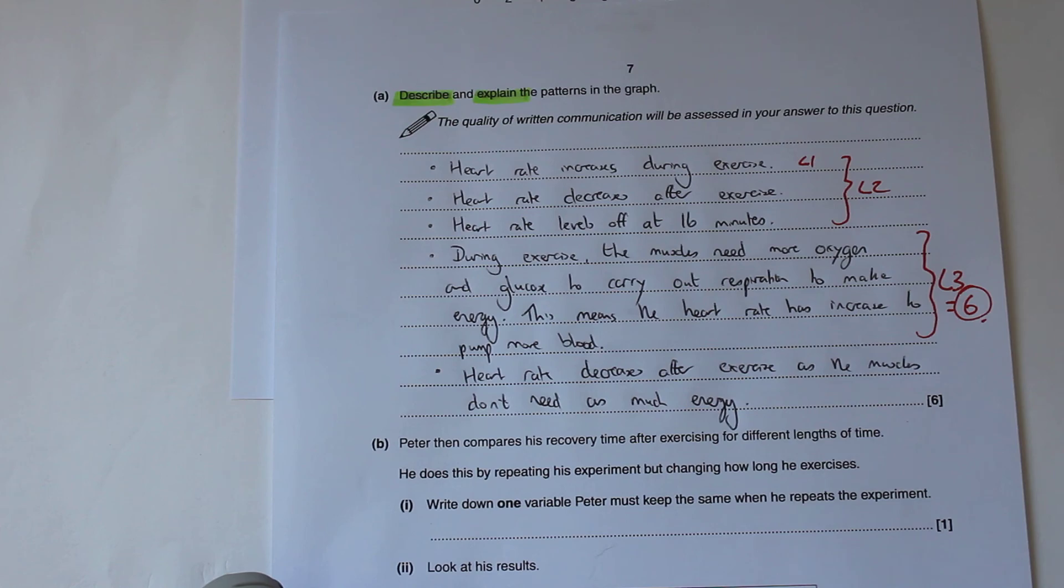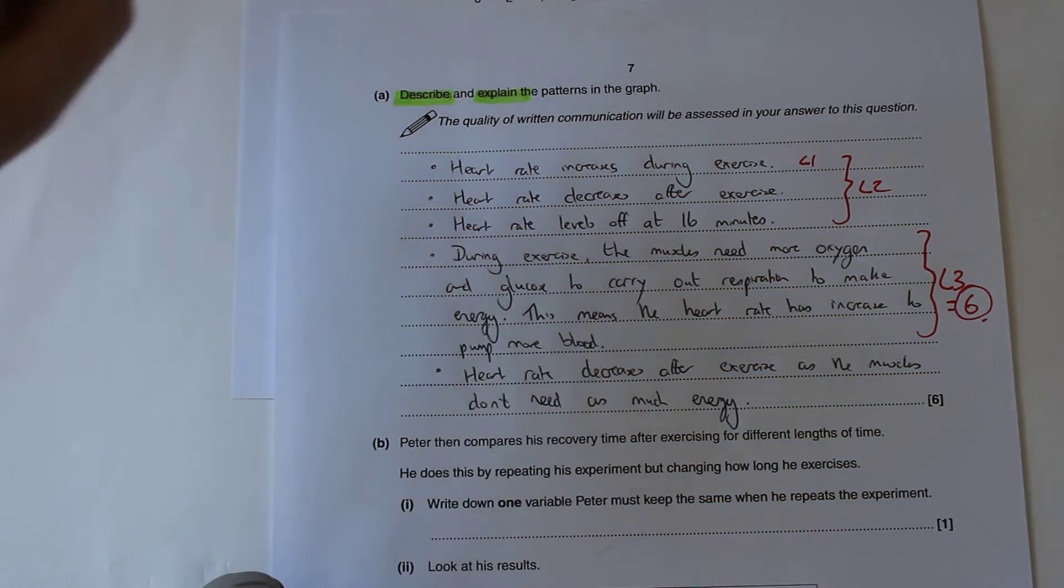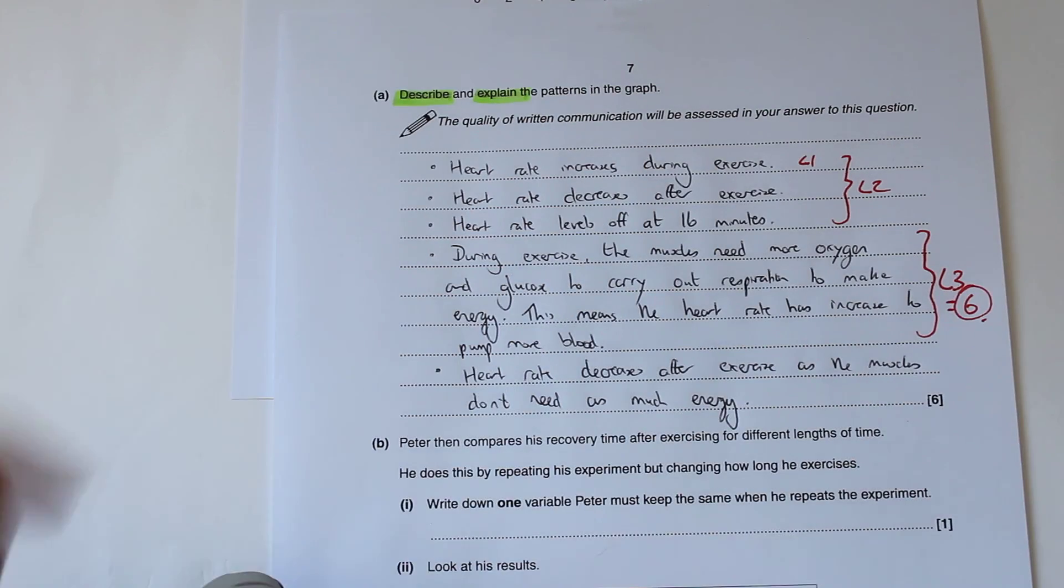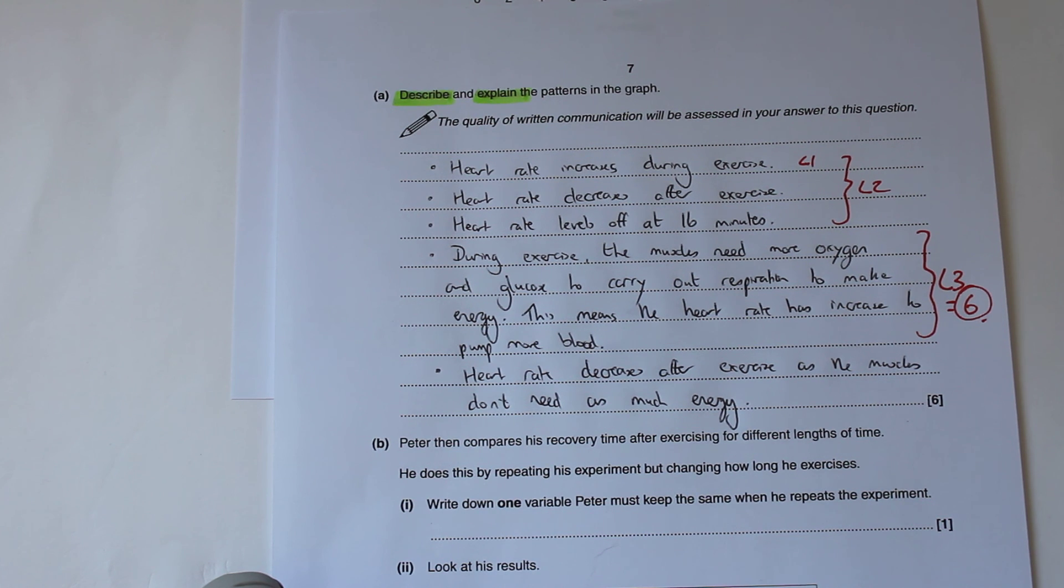Just remember that when we get one of these describe and explain patterns in the graph questions, start off very logically by going through, look at the start of the graph, describe the patterns. Put them down in sequence, then the explain is to say why we get each of those. As I always tell my groups, describe you say what you see, explain you say what you see and why that occurs.